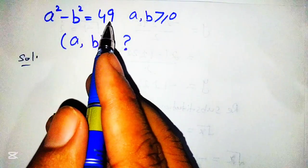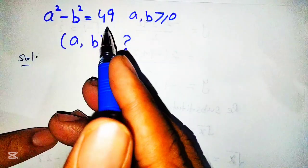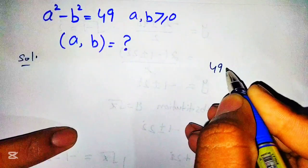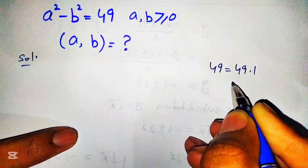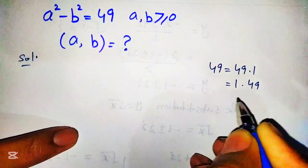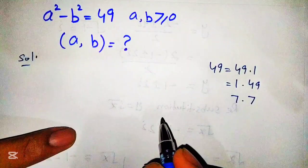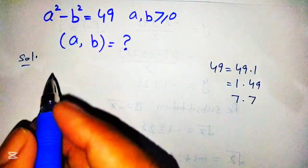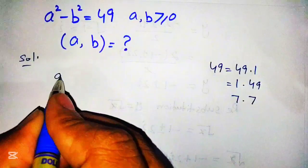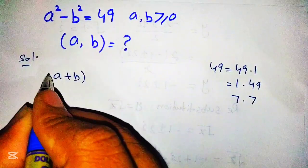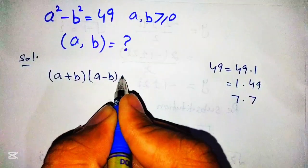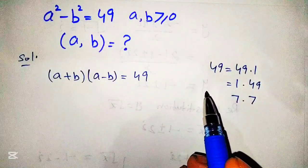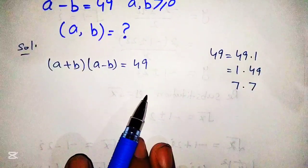First we write 49 in terms of factorization. The factors of 49 can be written as: 49 equals 49 times 1, or 1 times 49, or we can also write it as 7 times 7. These are the factors of 49 which appear on the right-hand side of the equation. Applying the formula on the left-hand side, a plus b times a minus b equals 49. There are three pairs of factors of 49, so we will solve this in terms of three cases separately.